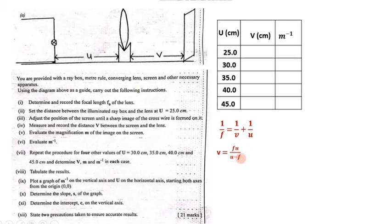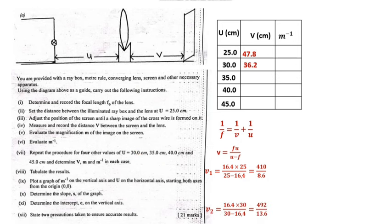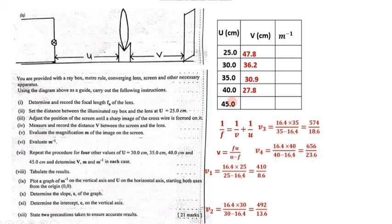Substituting the values of U into V = FU/(U minus F): for U = 25 we get V₁ = 47.85; for U = 30 we get V₂ = 36.2; for U = 35 we get V₃ = 30.9; for U = 40 we get V₄ = 27.8; and for U = 45 we get V₅ = 25.8. It's similar to what we had in the previous question because the values of U are the same.